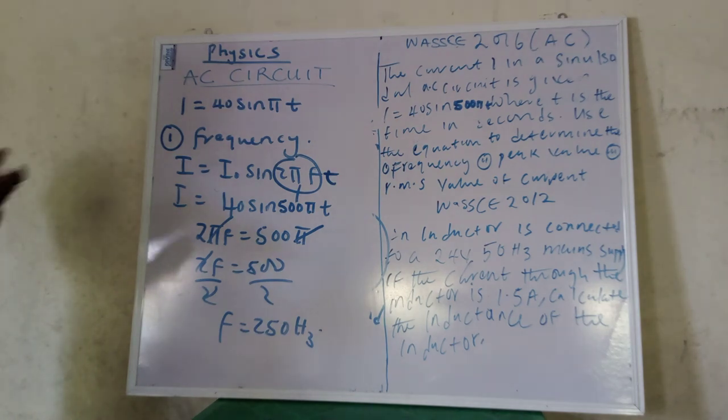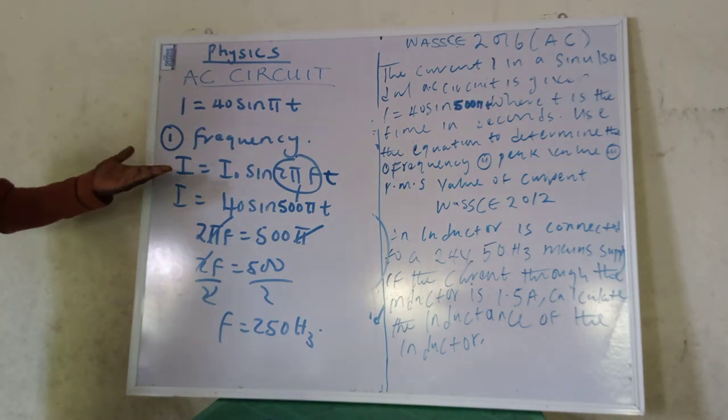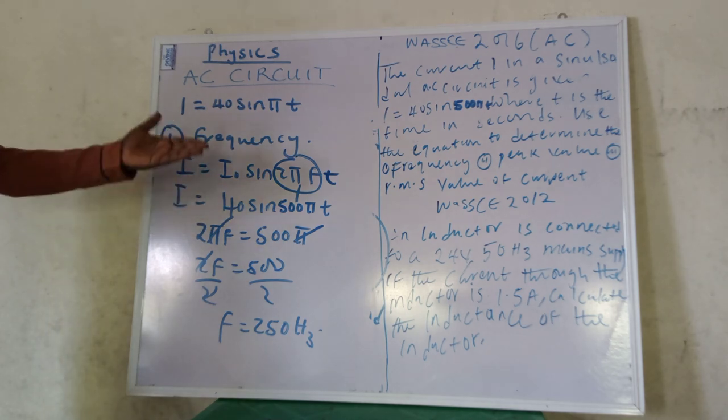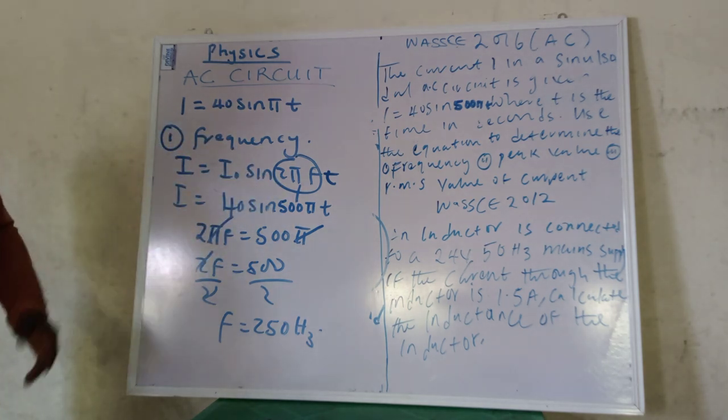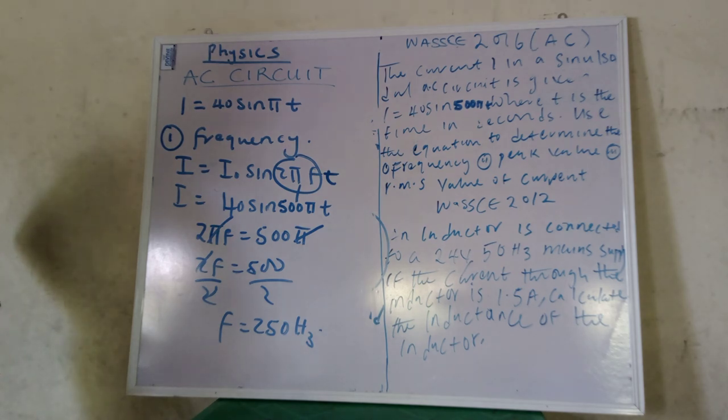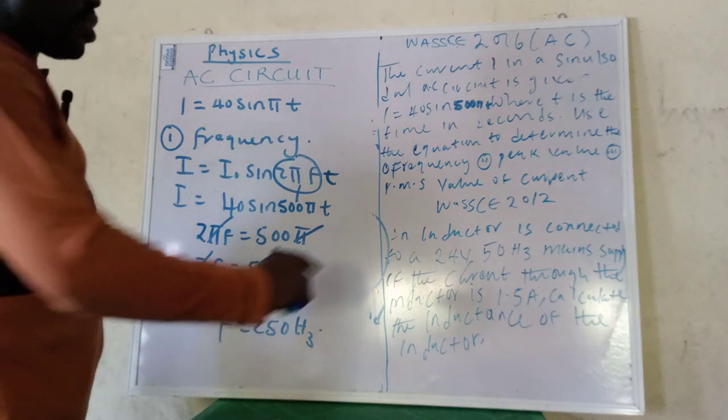That's very simple. Again, if you have an issue with this, I think there shouldn't be any issue, but the question is just for you to make comparison, this and this, and then you are good to go. Very simple and straightforward question. So we go to the next question now, which says that we should find the peak value.